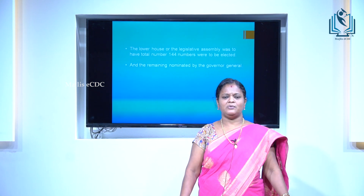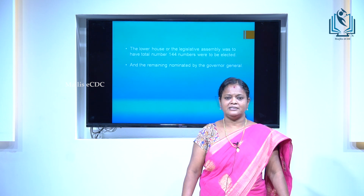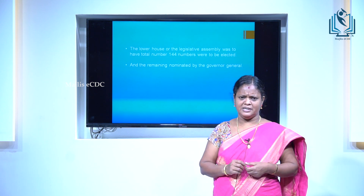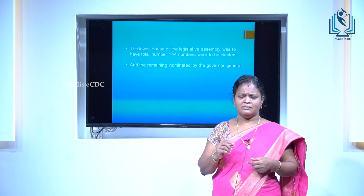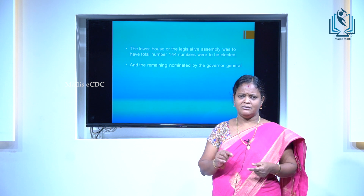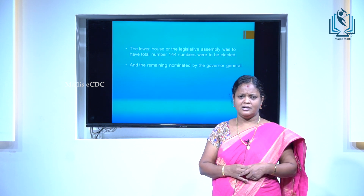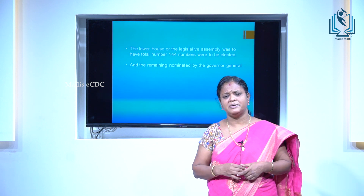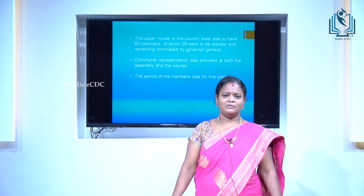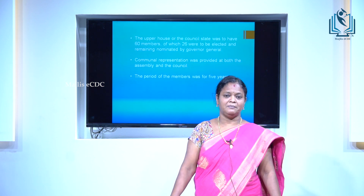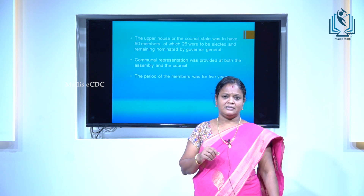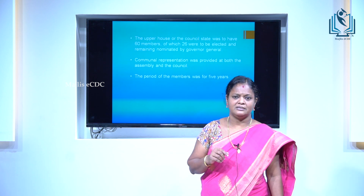The Act proposed a bicameral legislature at the centre. The lower house or Legislative Assembly was to have 144 members, of which 104 were to be elected and the others nominated by the Governor General. The upper house or Legislative Council was to have 60 members, of which 26 were to be elected and the remaining nominated by the Governor General.